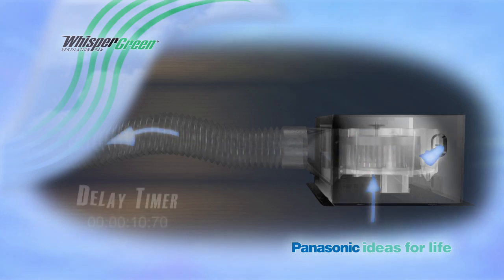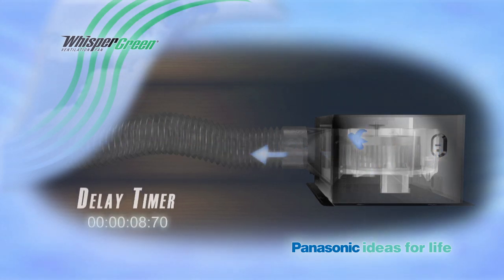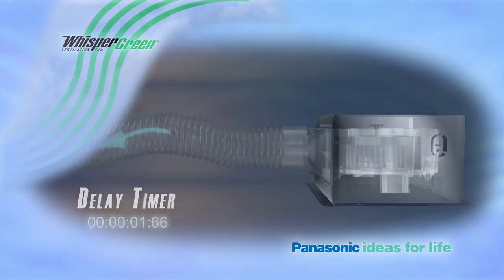Then, thanks to the built-in delay timer that can be set for anywhere from 0 to 60 minutes, the unit will automatically drop back to its continuous low-rate ventilation setting after the desired airflow.